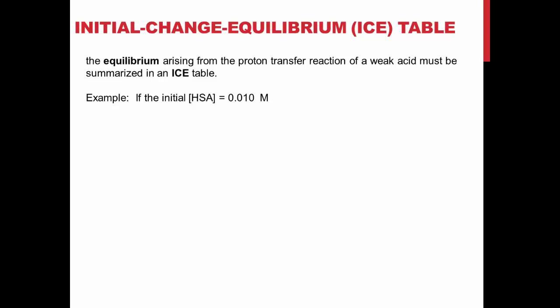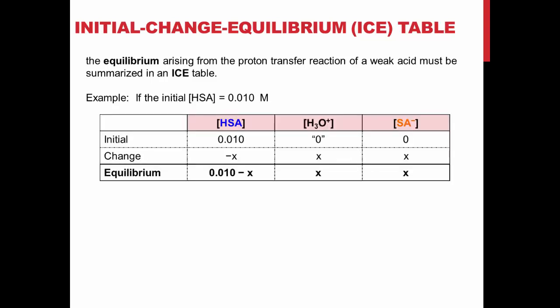The dissociation of the acid can be calculated using an ICE table. Initially, there are no hydronium ions or salicylic's conjugate base in the reaction flask. Therefore, their initial concentrations are zero.